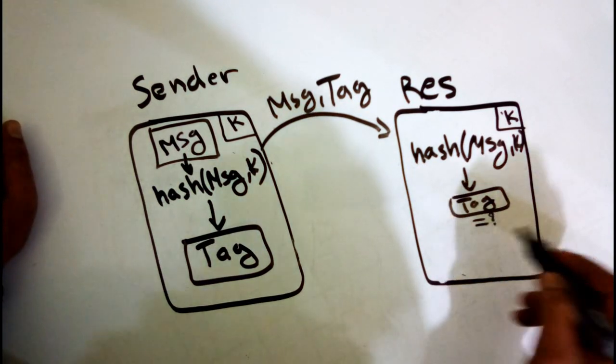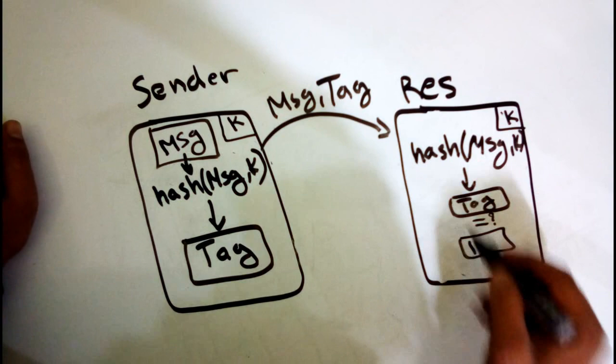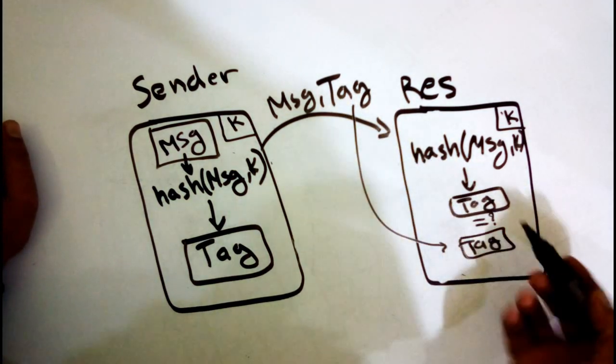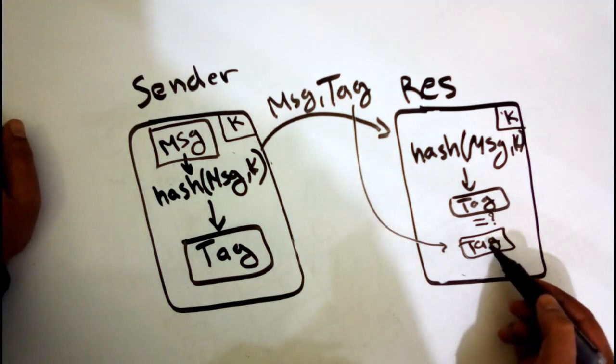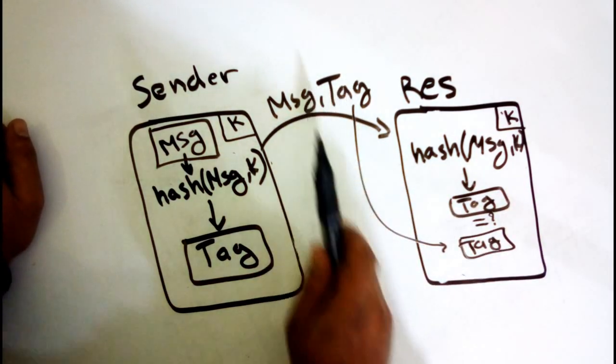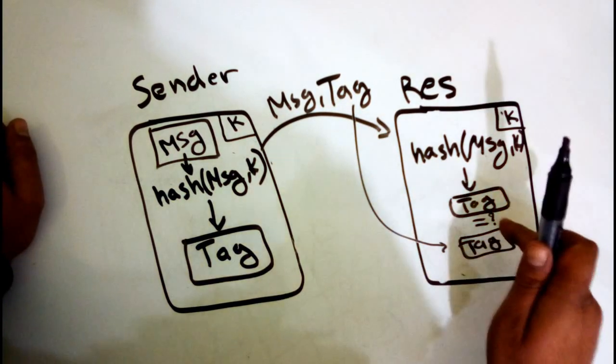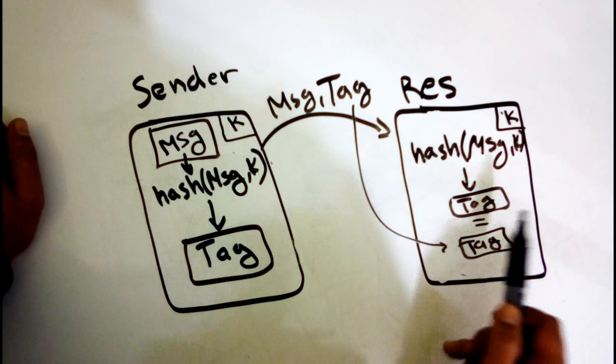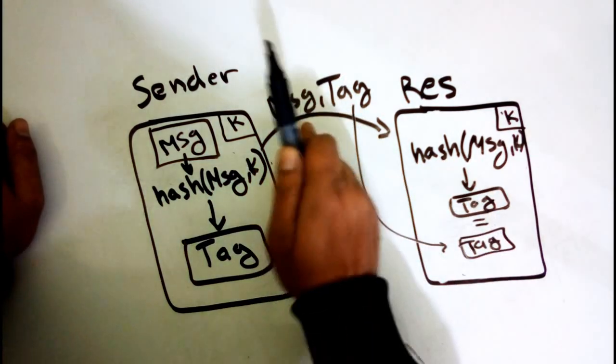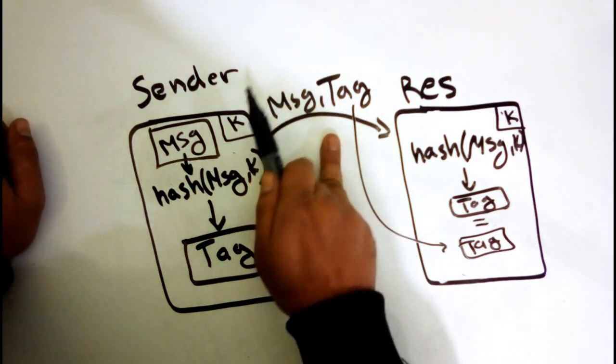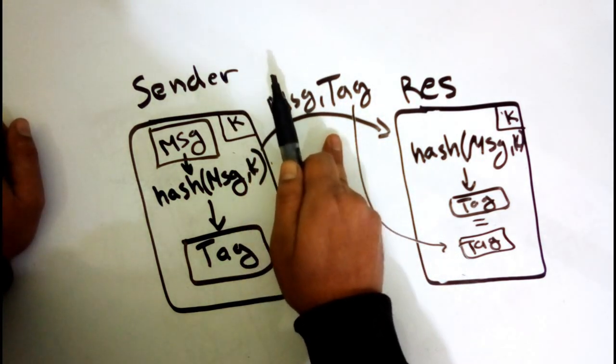If they are not equal, that means that someone changed the message or the tag. If they are equal, and that's the normal case, that means that no one changed the message or the tag. Notice that in this algorithm we don't care if someone sees the message content.